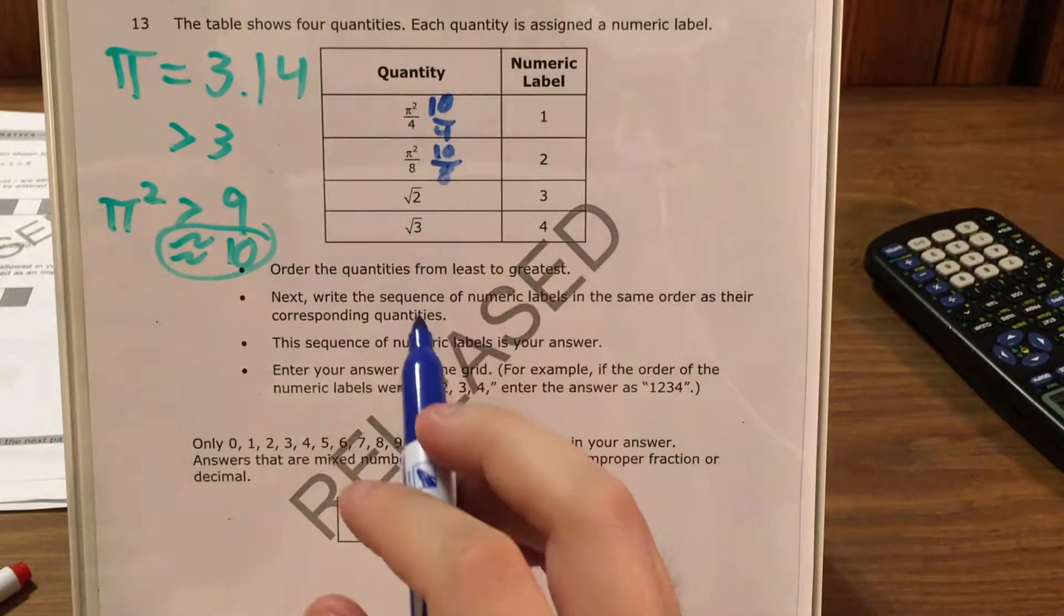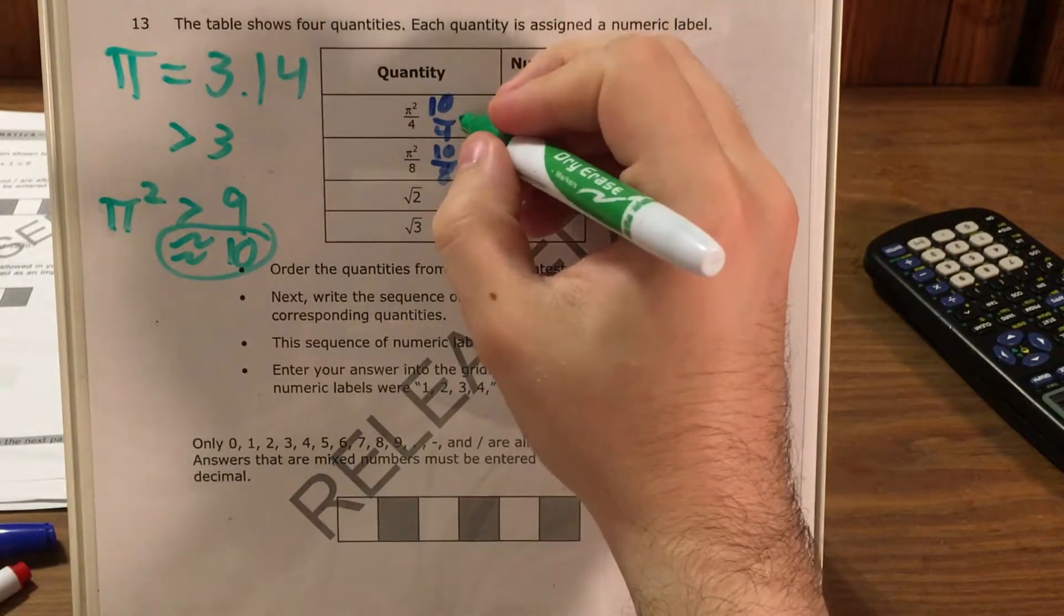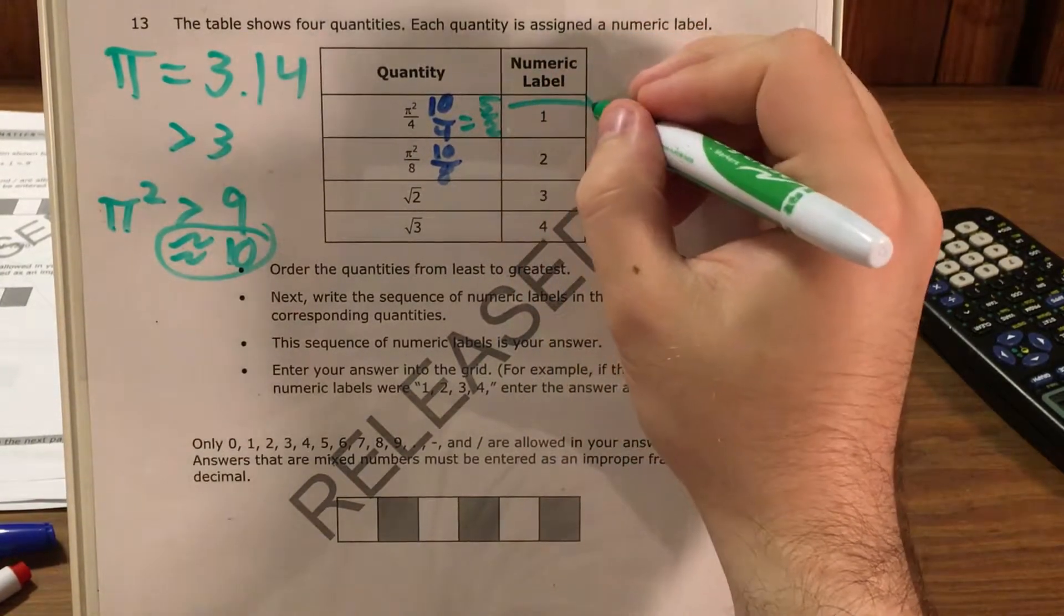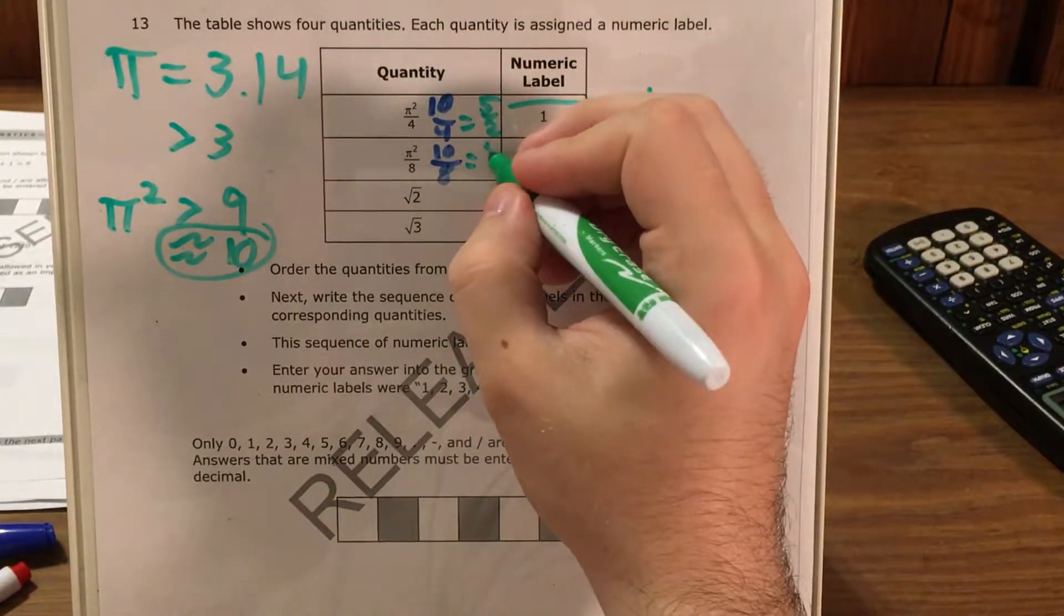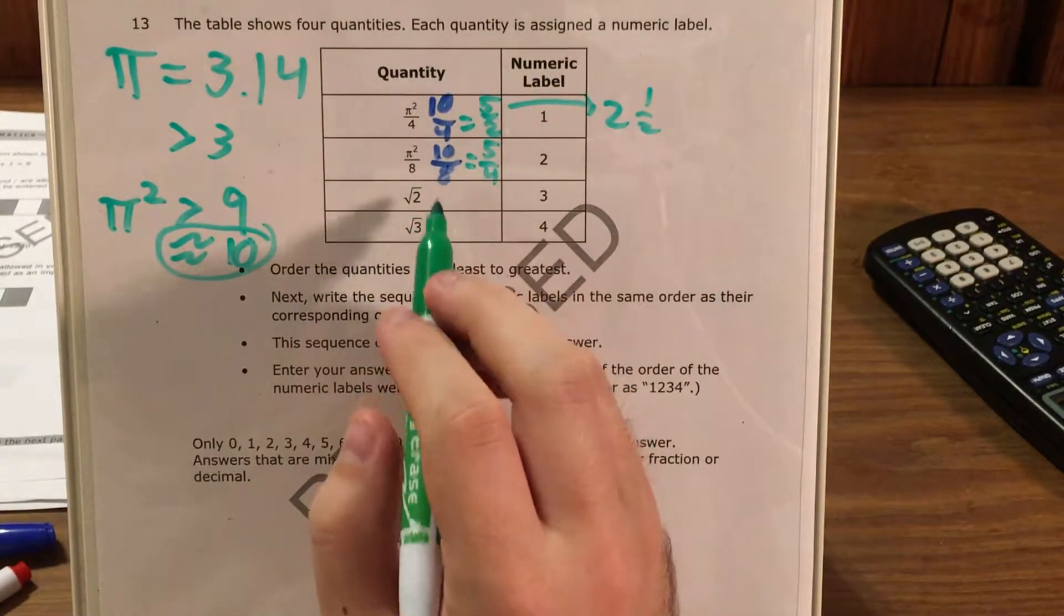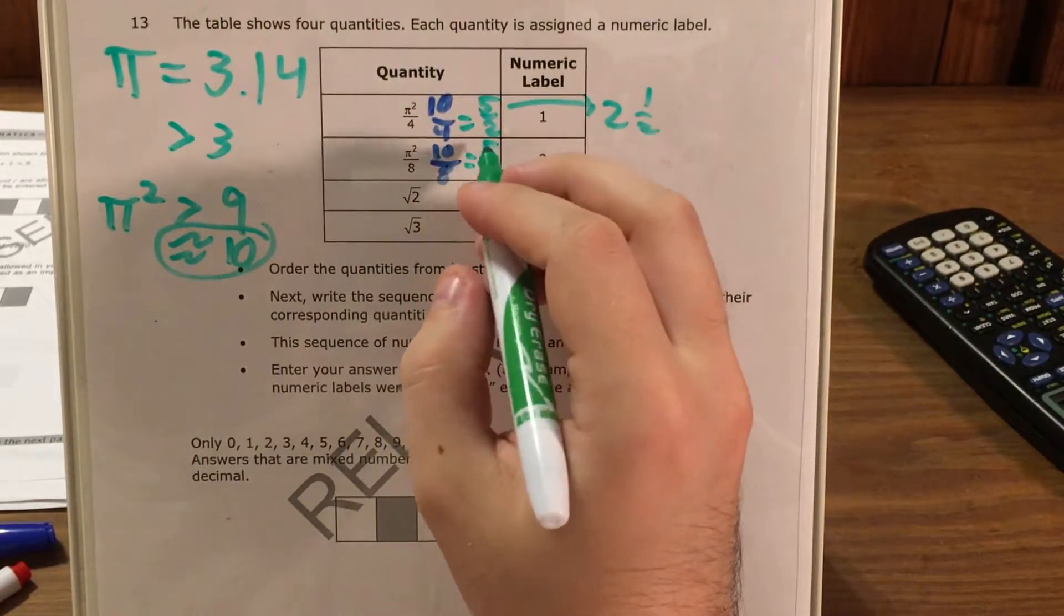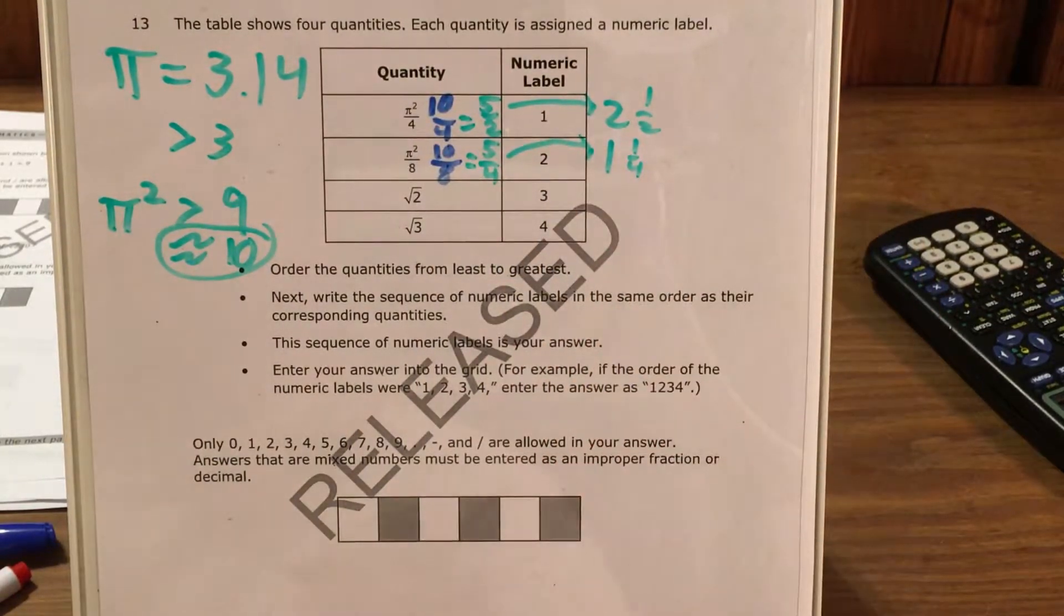And now I can go ahead and evaluate these fractions. 10 fourths I can simplify down to 5 halves which is also known as 2 and a half. 10 eighths I can simplify down to 5 fourths by dividing the numerator and denominator by 2, which is the same thing as 1 and 1 fourth. So now I have some decently precise numbers to work with.